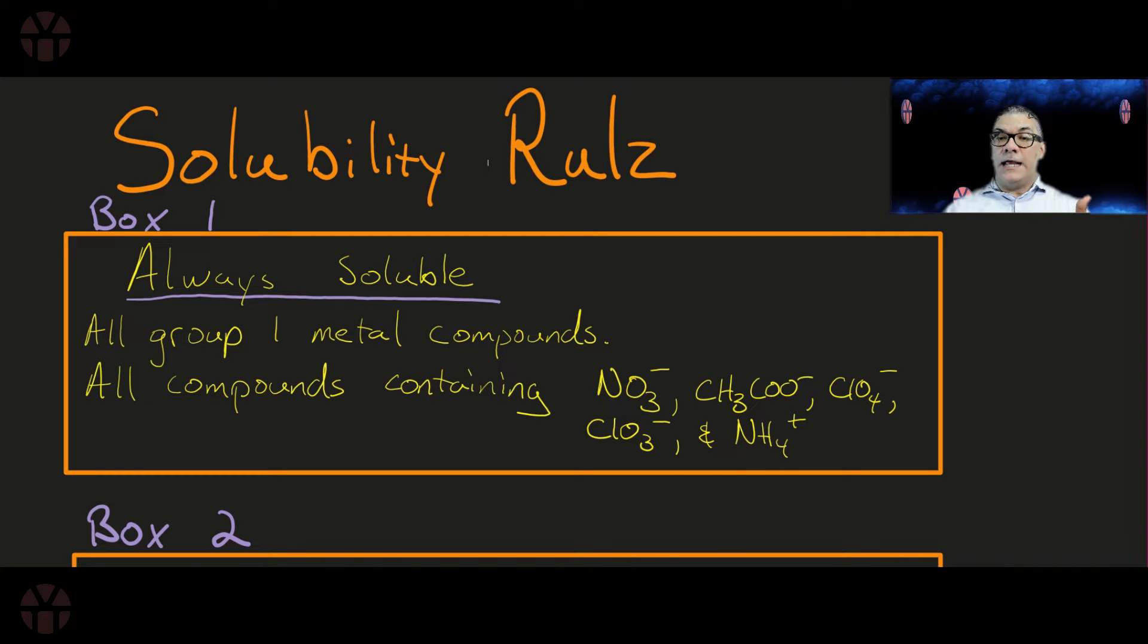Also, any compound that contains one of the following five polyatomic ions: NO3- better known as nitrate, CH3COO- better known as acetate, perchlorate ClO4-, and his cousin chlorate ClO3-, and finally the ammonium ion NH4+. So if you see ammonium whatever, soluble. If you see lead(IV) nitrate, soluble. The minute you see a compound that contains one of those, you know this thing is going to be soluble.